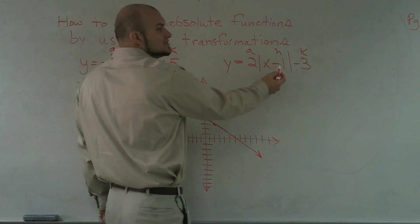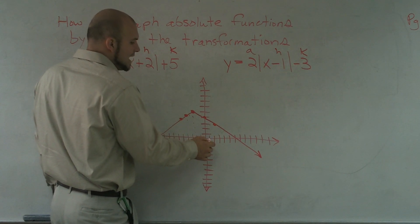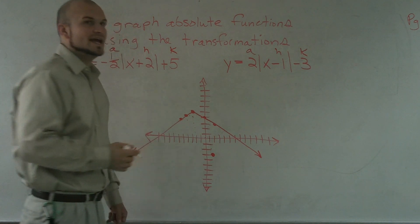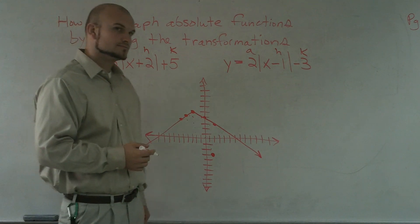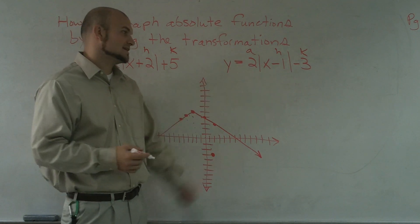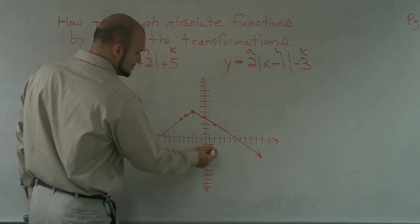Again, now my h is going to be negative 1. That's going to tell me to go shift 1 to the right and then go down 3. So, my vertex is at h, k. Then, after I have my vertex at h, k, now I'm going to use my a as my slope which is going to tell me to go up 2 over 1.